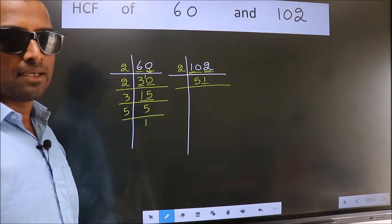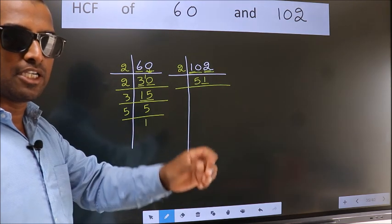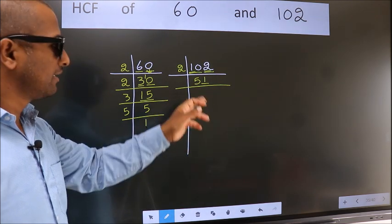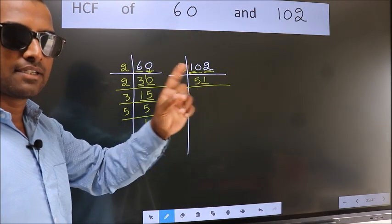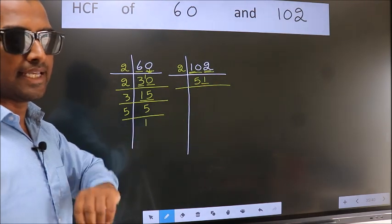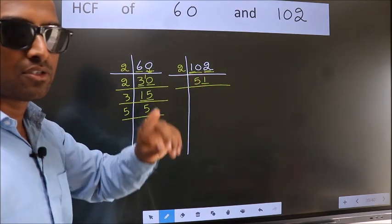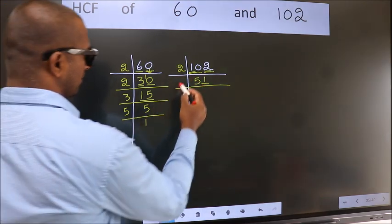To check divisibility by 3, we should add the digits. 5 plus 1, we get 6. Is 6 divisible by 3? Yes. So this number is also divisible by 3. So take 3.